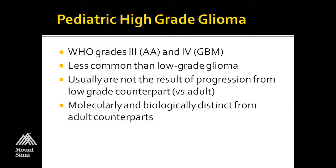An important difference is that these are usually not the result of progression from a low-grade glioma in a pediatric population. These patients present primarily with either an anaplastic astrocytoma or a GBM. They are very molecularly and biologically distinct from their adult counterparts, and the distinction between a grade 3 and a grade 4 in the pediatric age group is also less important from a prognostic perspective.